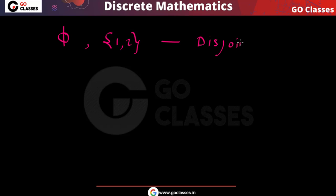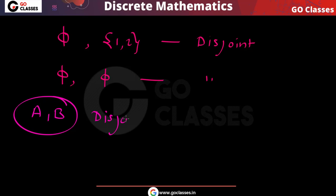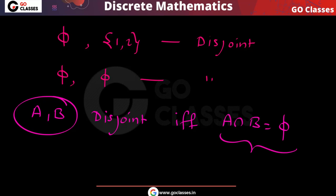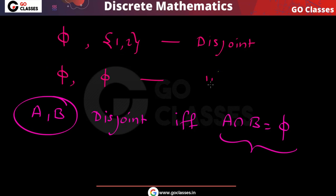Also by definition, φ (empty set) is disjoint with every set, because their intersection is φ. Similarly, φ and φ are also disjoint. Just apply the definition: two sets A and B are disjoint if and only if A ∩ B = φ. So {φ, φ} — these two sets are also disjoint because their intersection is φ.